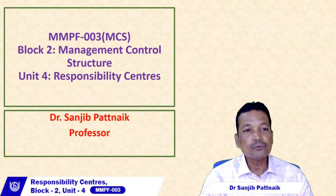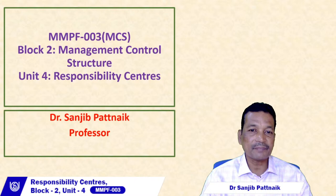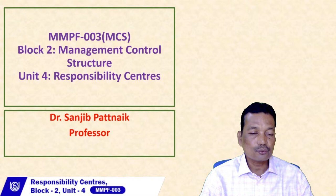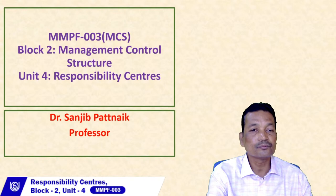Now, in Block 2, which will be comprising of Units 4 to 8 — that means 5 units — we will be looking at how the structure of Management Control should look like. Today we shall pick up the first topic: Responsibility Centers.